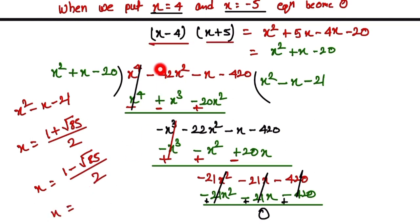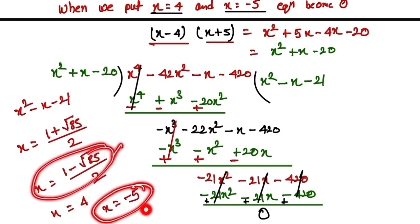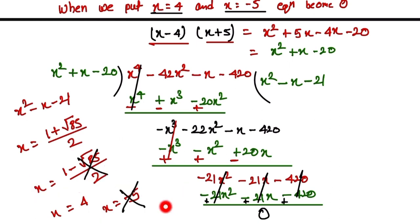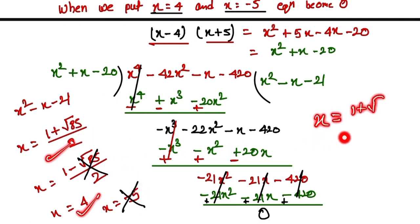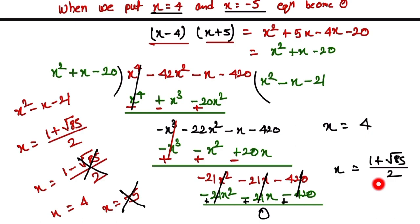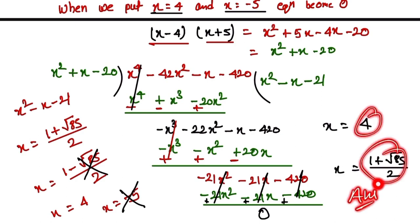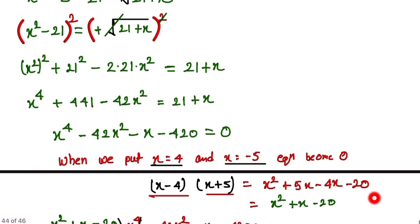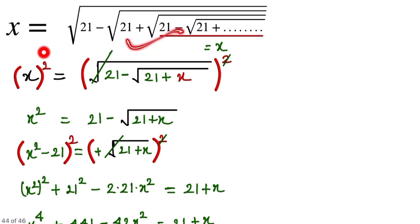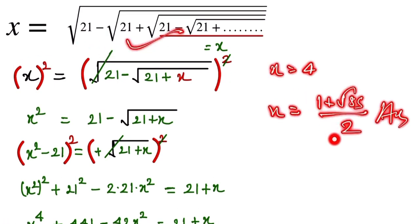The four values of x are 4, minus 5, (1 plus square root of 85) over 2, and (1 minus square root of 85) over 2. We cannot take negative values of x because the expression is given in square root form, which would make x imaginary. So we take only the positive values. Therefore, x equals 4 and x equals (1 plus square root of 85) divided by 2. Thank you so much for watching my video.